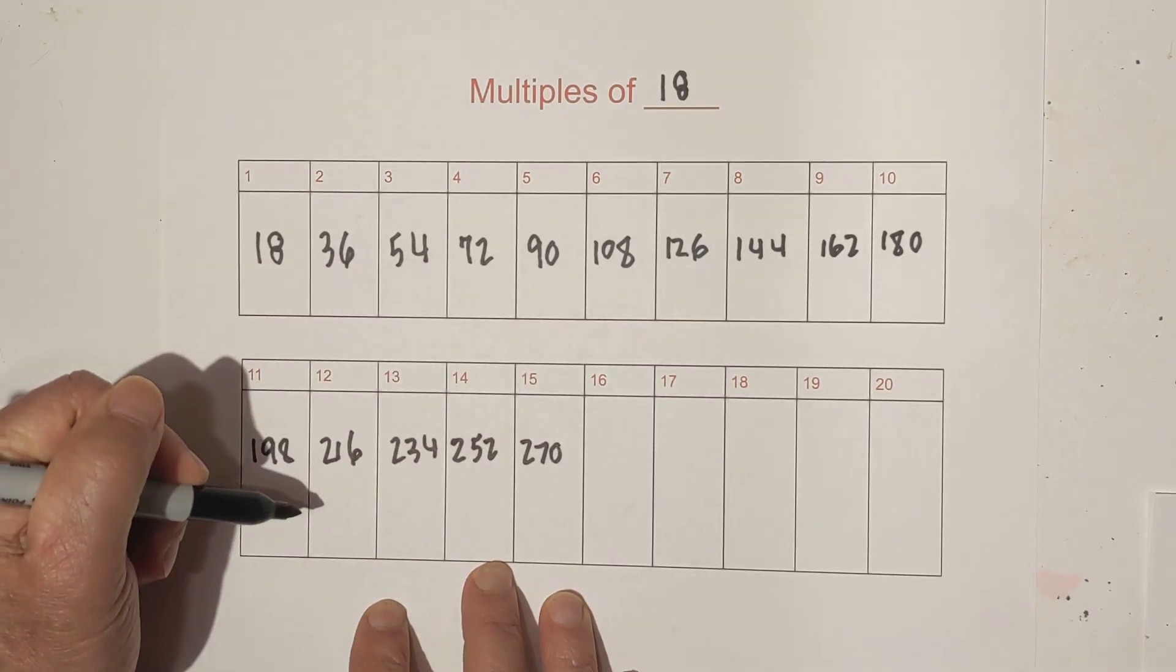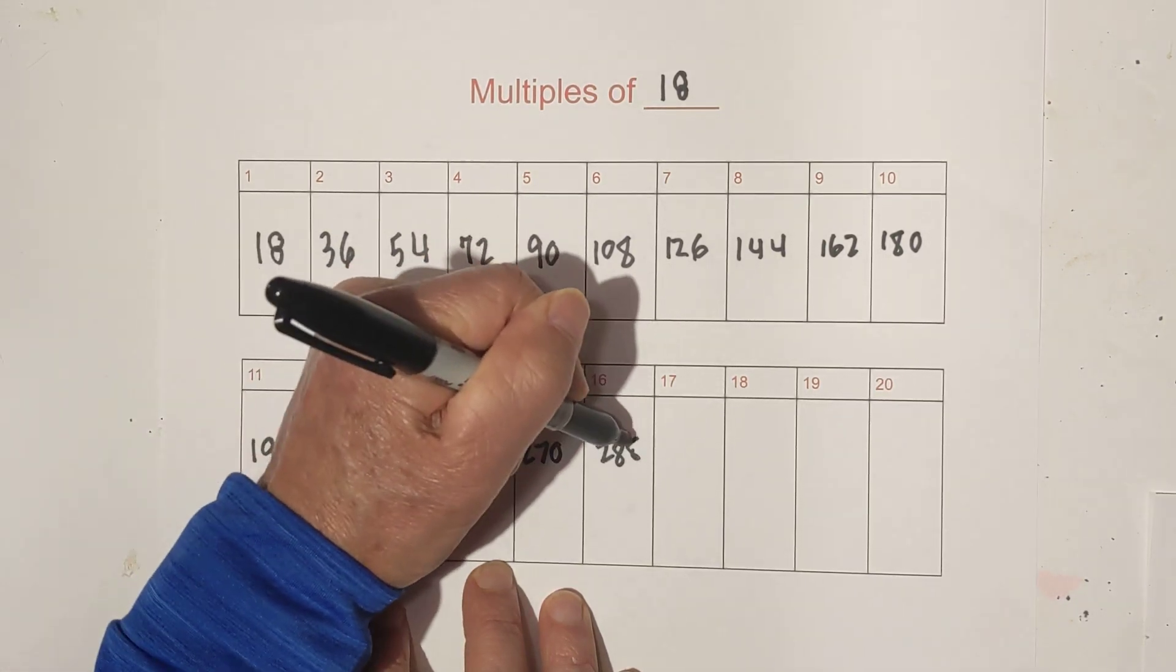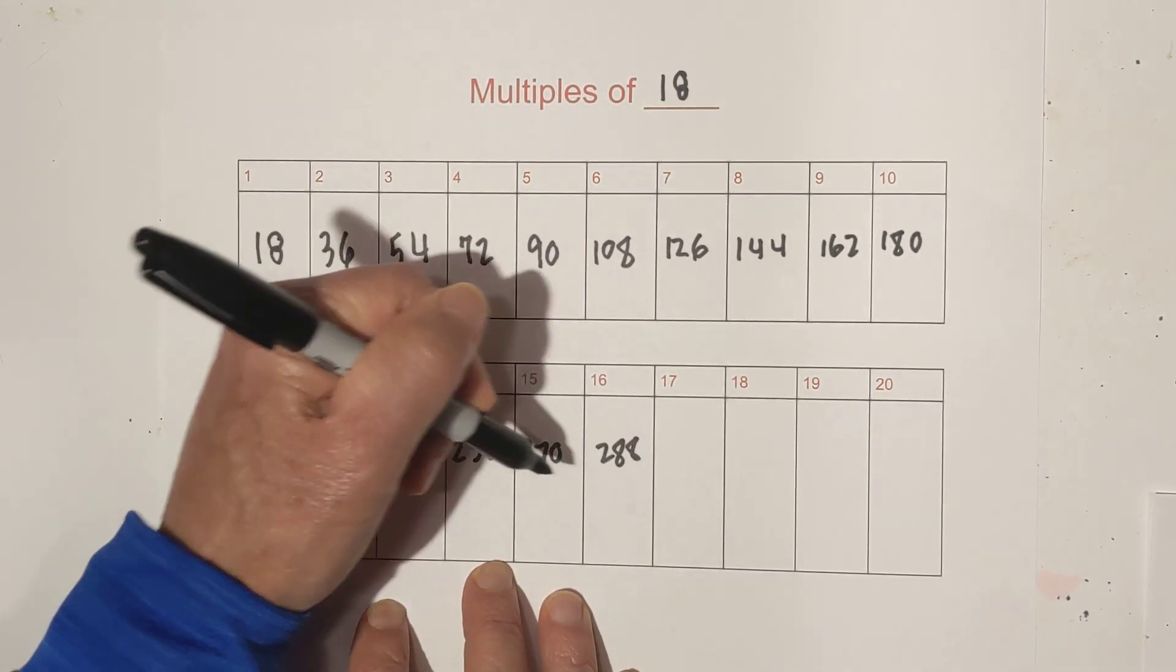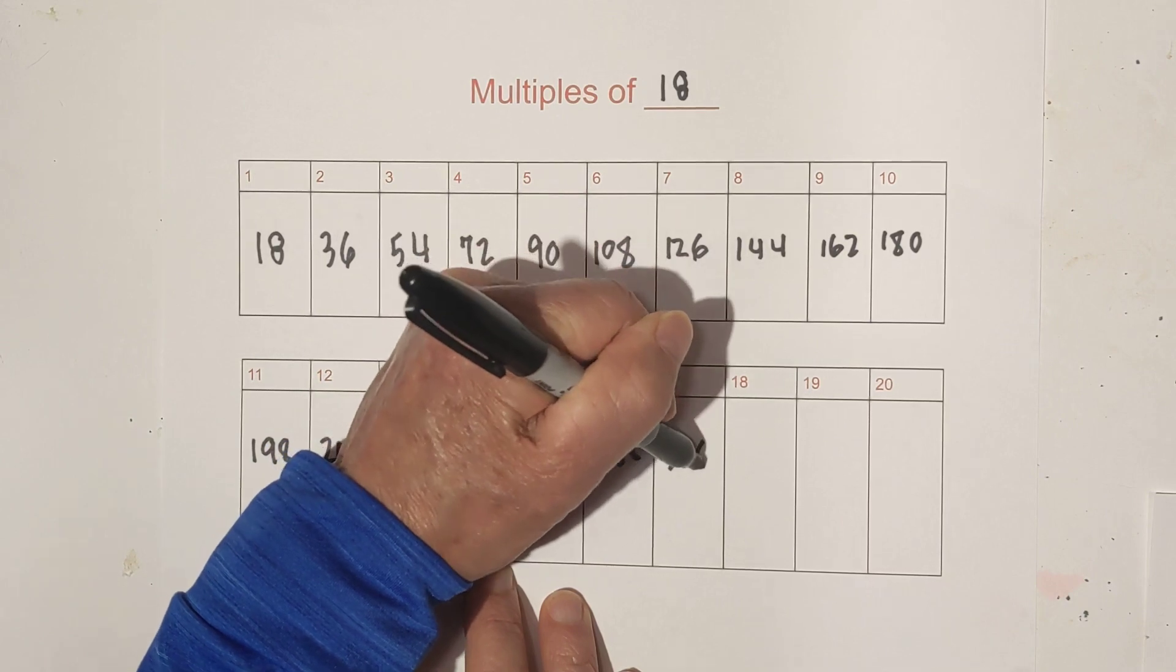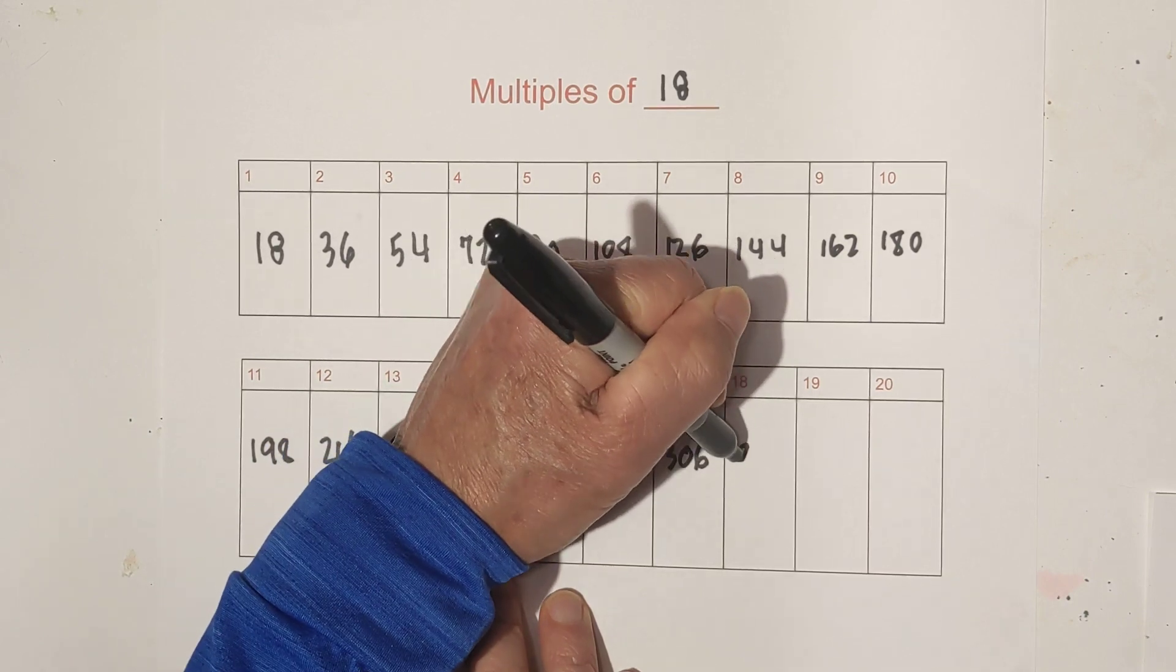And then 16 times 18 is 288. Whoops, bad looking 8 there. Then we have 306, 324.